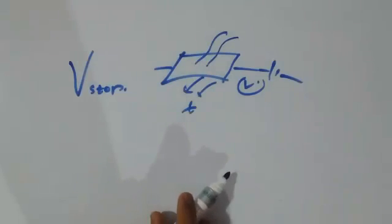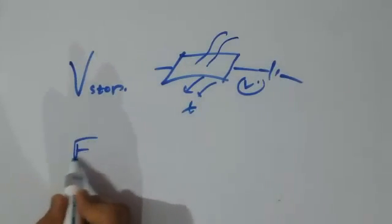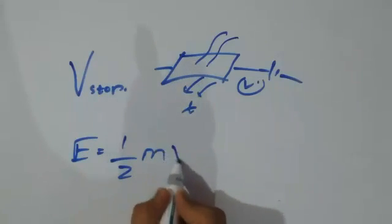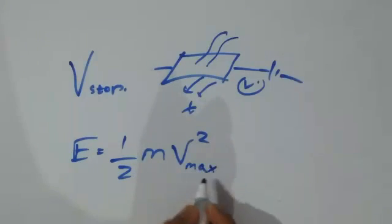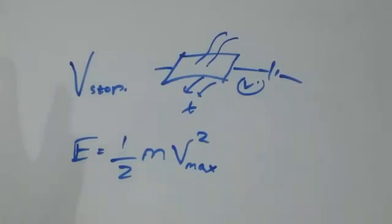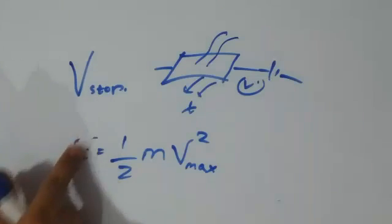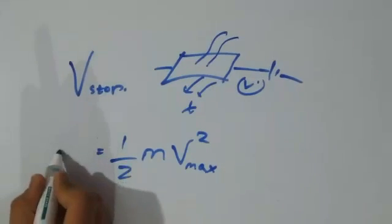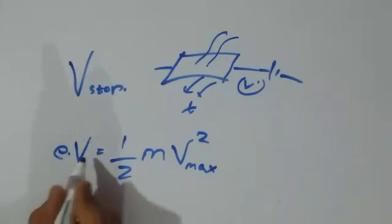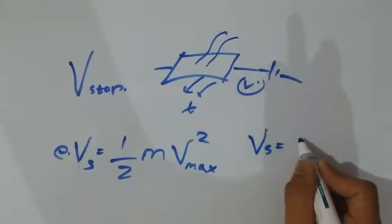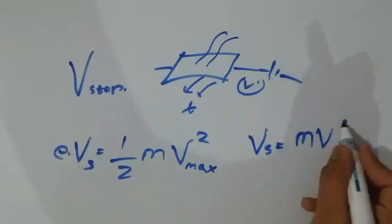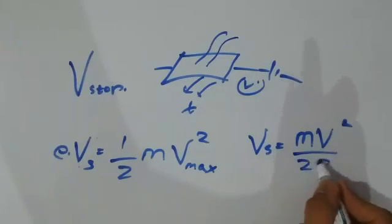Just apply the formula for the stopping potential, a very simple one. You know the formula of energy equals half of mv². Here electrons would have the maximum velocity for the stopping potential, and energy is depicted in the electron volt. So instead of E we can write E × V, where V is the stopping potential. So the basic formula for stopping potential is V_s = mv²/(2E).